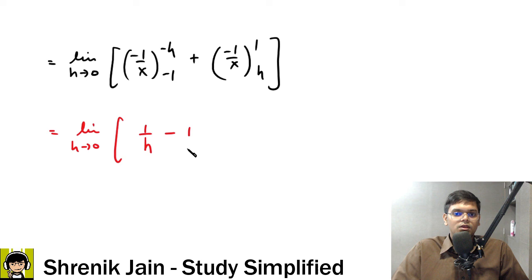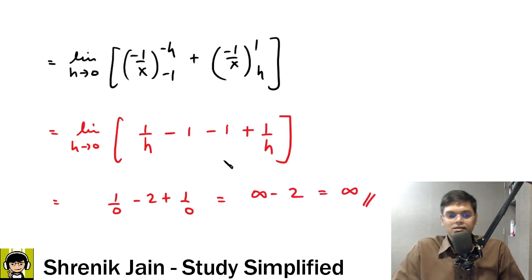So minus lower limit will give me minus 1 here. Upper limit will give me minus 1, and minus lower limit will give me positive 1 by h. So now this is 1 by 0 minus 2 plus 1 by 0, which is infinity minus 2, which is infinity. Infinity is the answer.